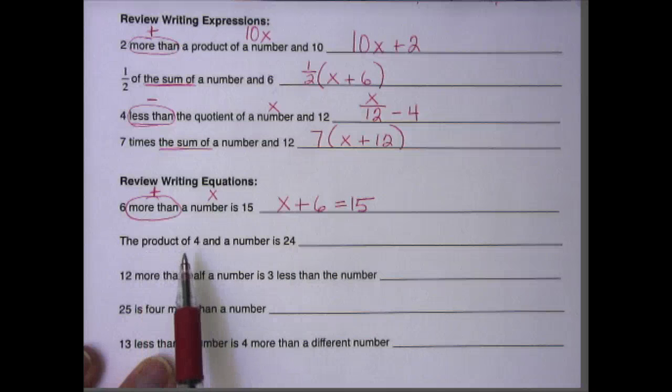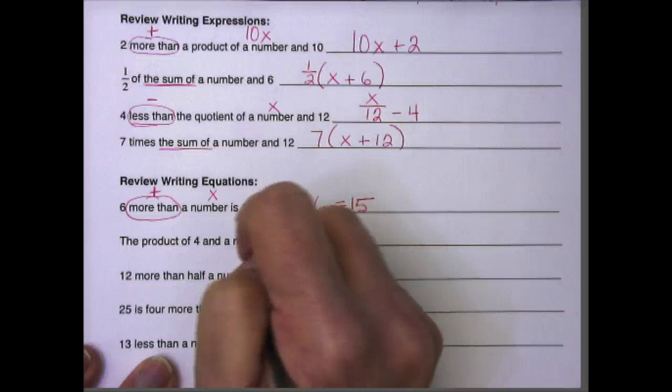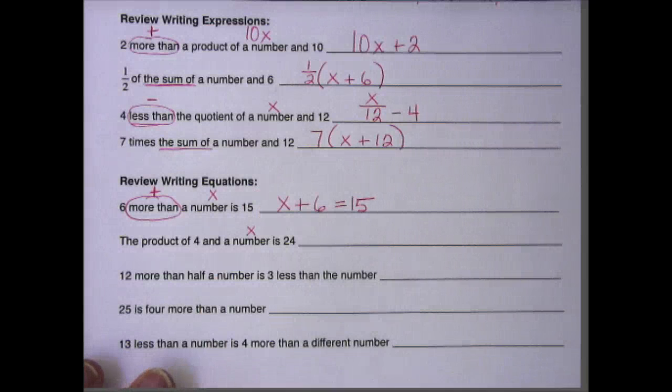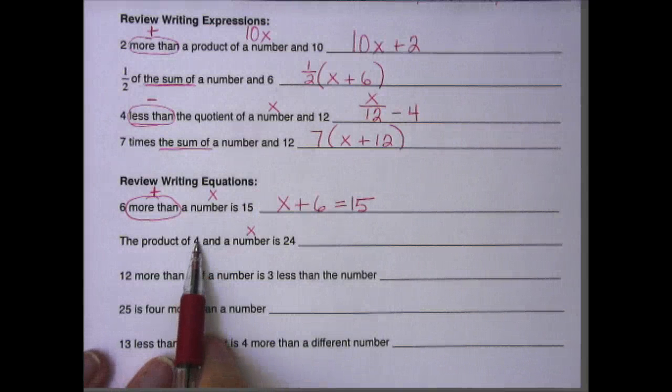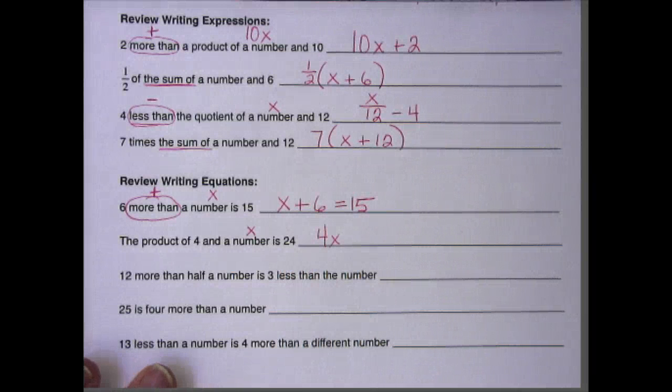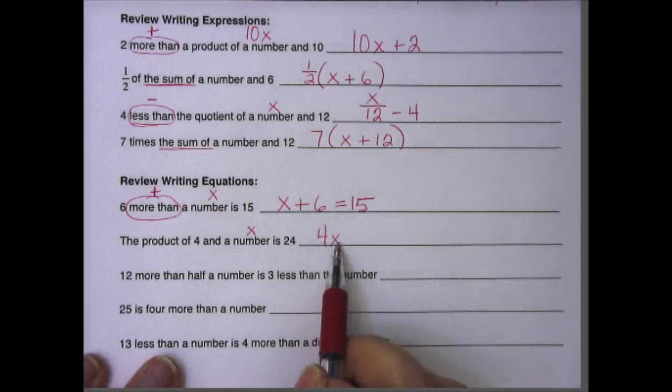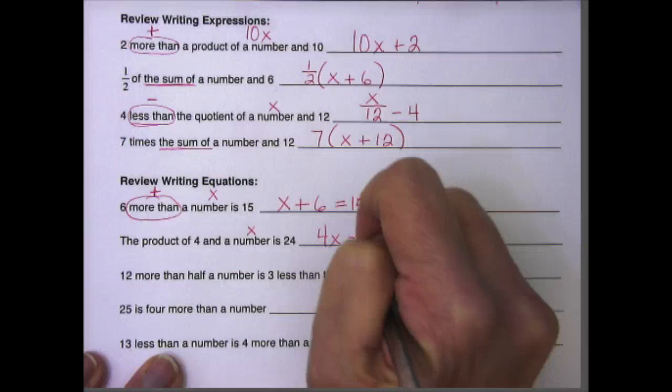The product of 4 and a number is 24. We know that a number, we always call that a variable. We usually use x. The product of 4 and x means 4 times x, and remember you don't need parentheses or a dot or anything between them. When we set them right next to each other, it means to multiply equals 24.